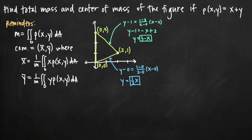Today we're going to be talking about how to find mass and center of mass of the figure we've been given, which is just a triangle with vertices at (0,0), (0,3), and (2,1), if we've also been given the equation rho of x,y is equal to x plus y. Remember this is the Greek alphabet character rho.